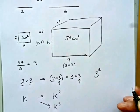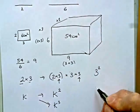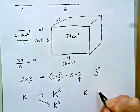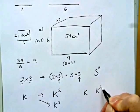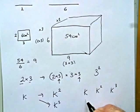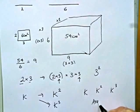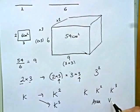So just to recap, if our enlargement factor is k, then this will affect the area by a factor of k squared, and it will affect the volume by a factor of k cubed. So that's our area, and that's our volume.